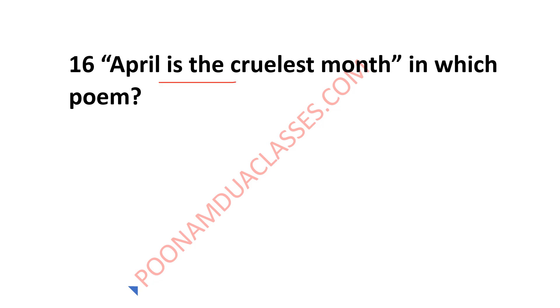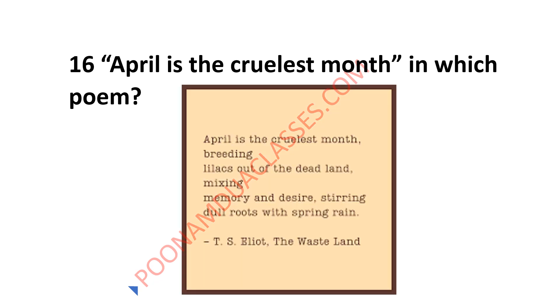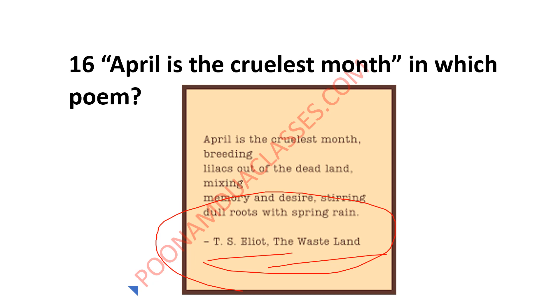Next question: 'April is the cruelest month' appears in which poem? The correct answer is the very popular five-part poetry, The Waste Land, by T.S. Eliot.